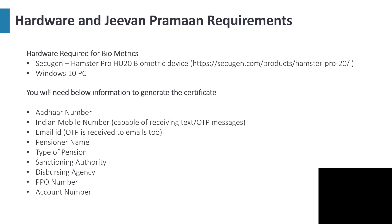I have listed here the hardware and other requirements you need prior to generating the certificate. For hardware, I am using the SecuGen Hamster Pro HU-20, which is a biometric device, and I have added the link from where you can buy this device. They have partner sites from where you can buy it, and I have used a Windows 10 PC for this.